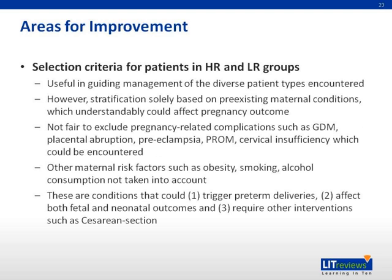The criteria used to stratify pregnancies into high and low risk were also imperfect. High-risk pregnancies were selected based only on pre-existing maternal conditions, without considering pregnancy-related conditions such as preeclampsia and gestational diabetes. Additionally, maternal risk factors that alter pregnancy outcomes and fetal health, such as obesity, smoking, and alcohol consumption, were not taken into account.